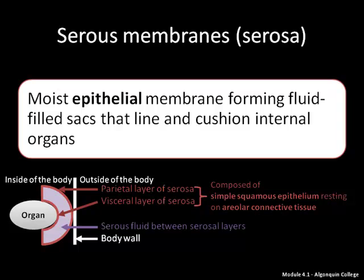The serous membranes, or serosa, are moist epithelial membranes forming fluid-filled sacs that line and cushion internal organs. Serous membranes are found in two layers: the parietal layer and the visceral layer. The visceral layer faces an internal organ, while the parietal layer faces the outside of the body. Both layers are composed of simple squamous epithelium resting on areolar connective tissue. Contained between them is the serous fluid, which serves to cushion the internal organ being protected.